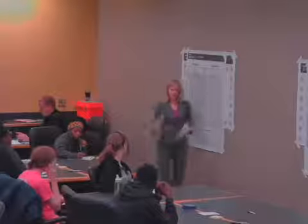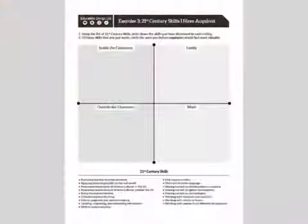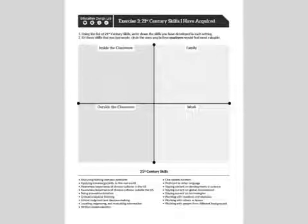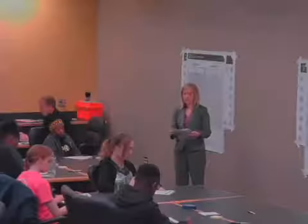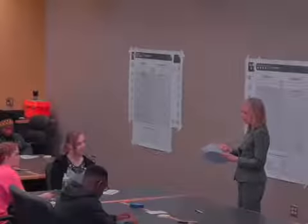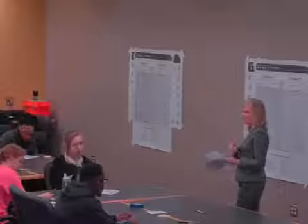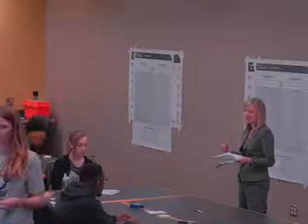Now we'd like for you to turn to the next page in your workbook, titled '21st Century Skills I Have Acquired.' You'll notice it has the same graphic, but at the bottom there is a list of 21st century skills detailed for you. Write down the skills that you have developed in each of those four settings. Then circle the ones that you believe employers would find most valuable. Talk through any trends that you saw emerging — were there some settings where you think you developed more of your skills than others, and what did this exercise reveal to you?